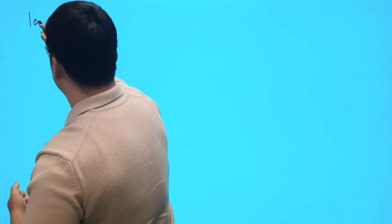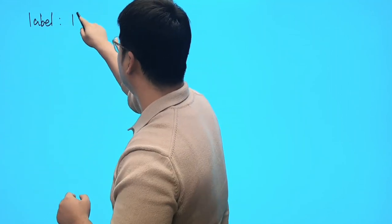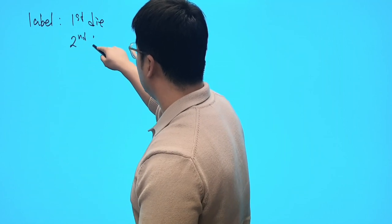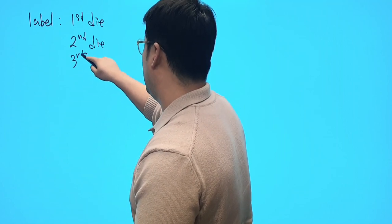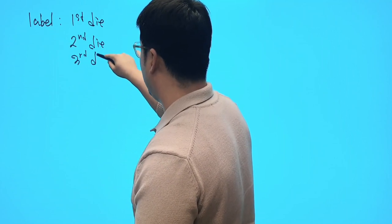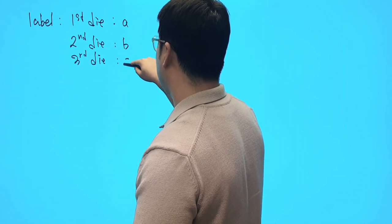So basically, when we have this type of questions, I would say, we need to label some stuff, right? So number one, label. So there's going to be the first die, the second die, and let's say the third die. Let's say the face value as A, B, and C.